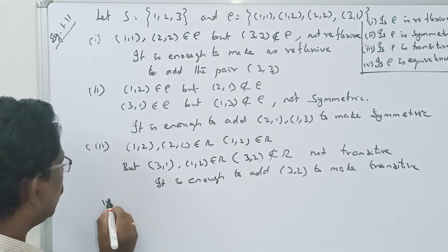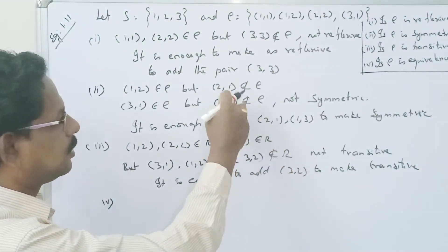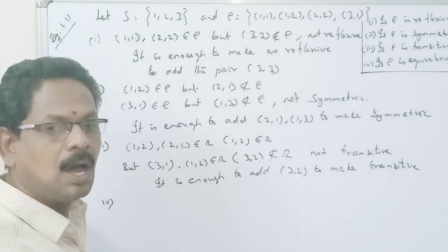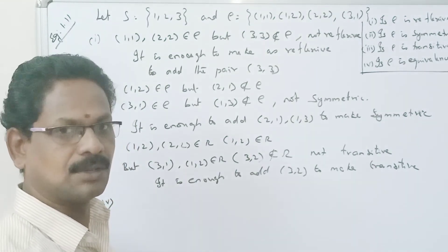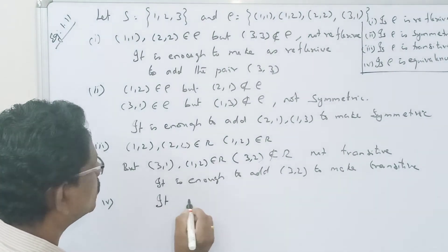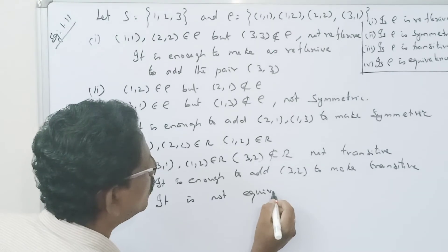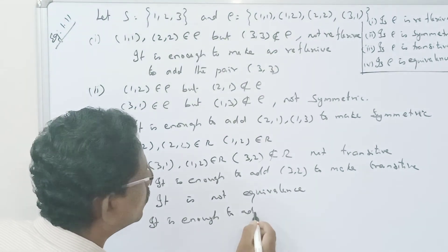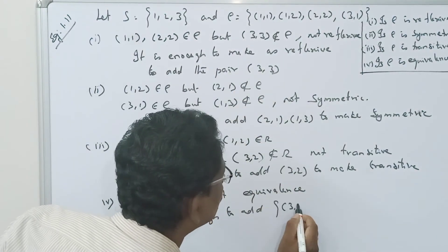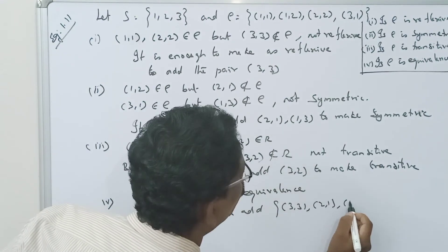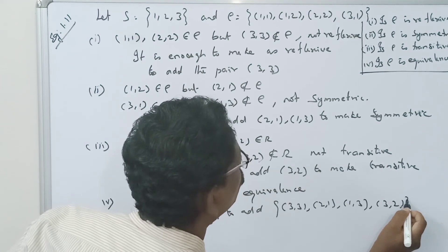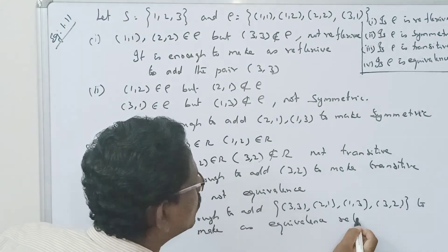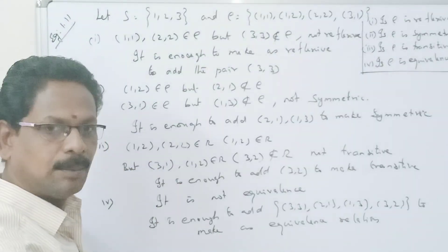Since R is not reflexive, not symmetric, and not transitive, it is not an equivalence relation. To make R an equivalence relation, it is enough to add the pairs (3,3), (2,1), (1,3), and (3,2).